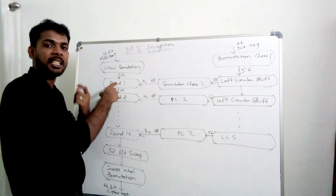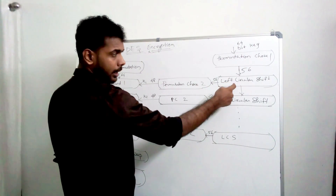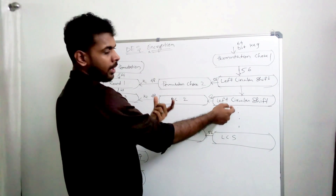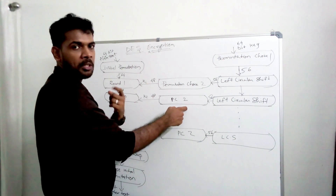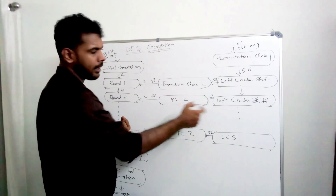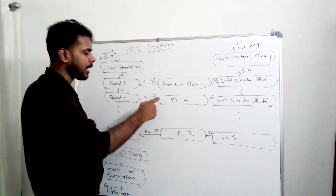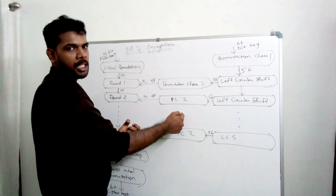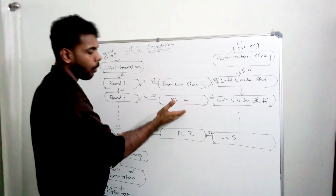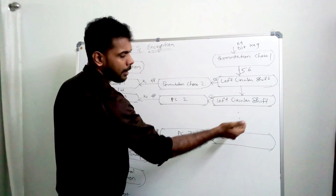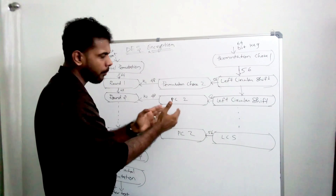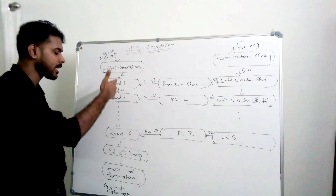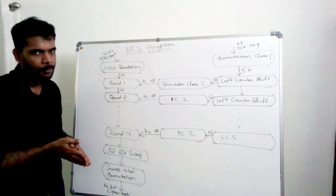We apply the left circular shift, then Permutation Choice 2 (PC2), and continue this process to develop all 16 subkeys. Each of the 16 rounds gets its own 48-bit key generated this way.